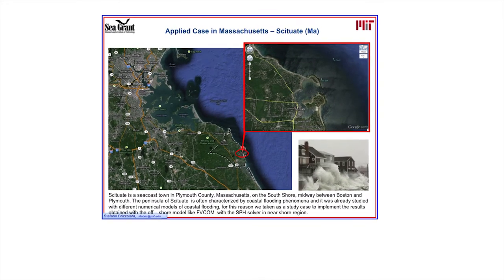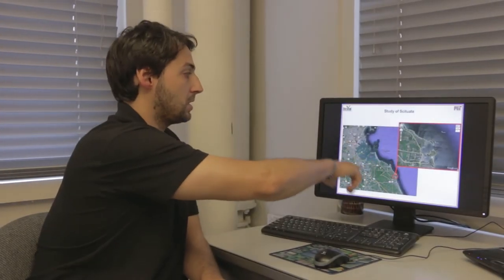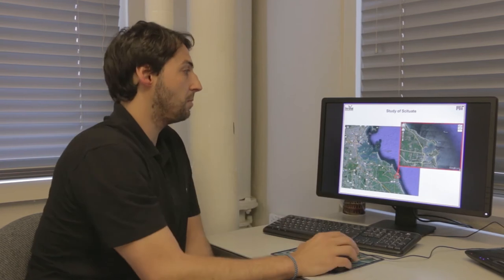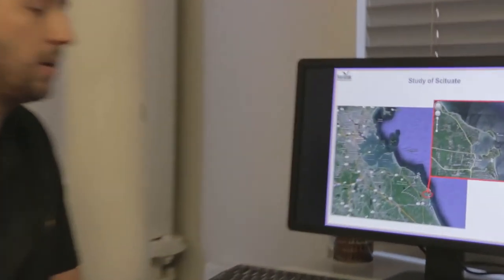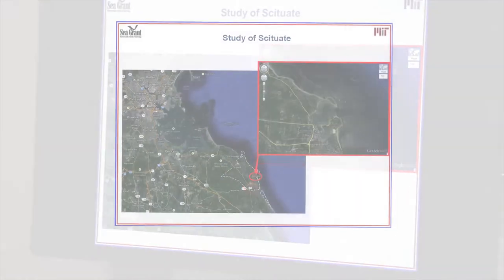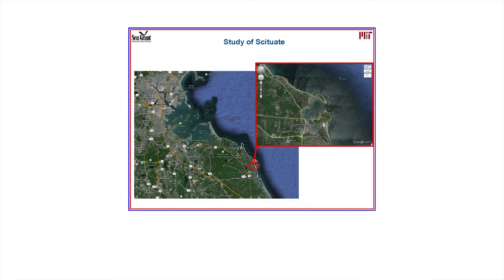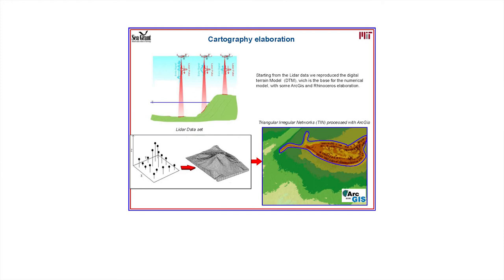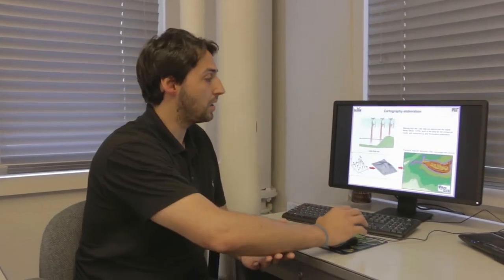After this first validation, we decide to study the peninsula of Sidhuid that is south of Boston. This peninsula is already studied with different kinds of models because during the last storms, there was flooding at different times. We start with a bathymetry dataset that we take from NOAA. This is a very accurate bathymetry dataset that we can use as a base for our model. With ArcGIS software, we reproduce this bathymetry that is really important for correctly reproducing the wave transformation in the surf region.